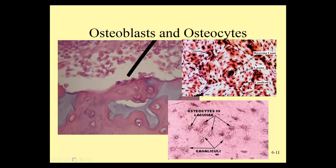Here we can see really nicely the canaliculi — the extensions from the osteocytes that help them communicate with one another. In this tissue slide, you can see those hazy lines, which are the canaliculi, and the dark spots in each ring of compact bone tissue are osteocytes in lacunae. The dark space is the lacuna, and filling that space is an osteocyte with these thin, spidery extensions called canaliculi. Be sure you're able to label these for lab, as they are important microscopic structures.